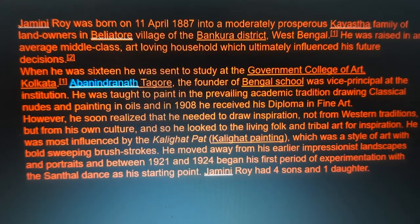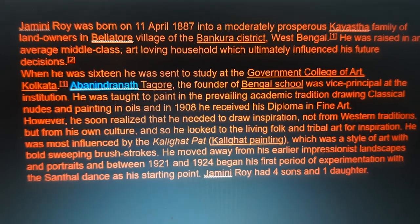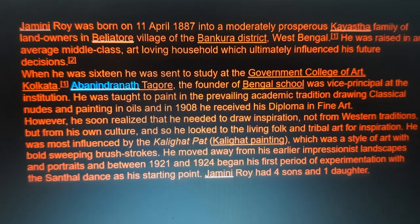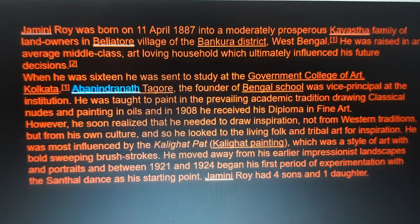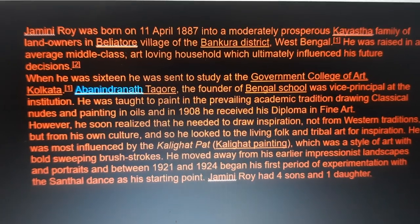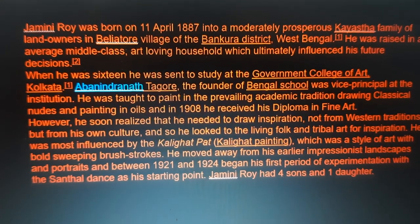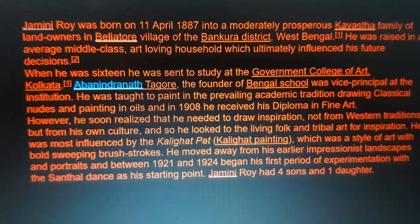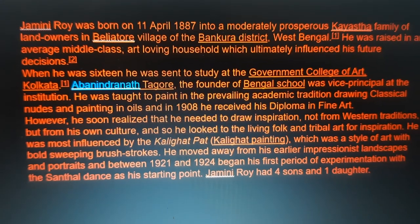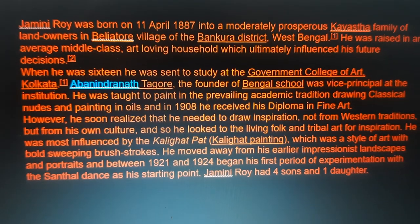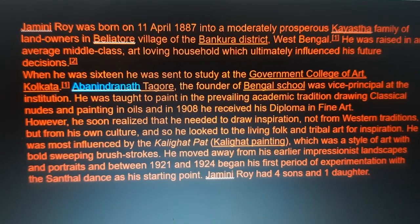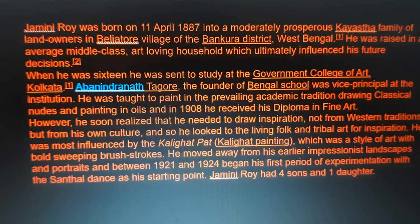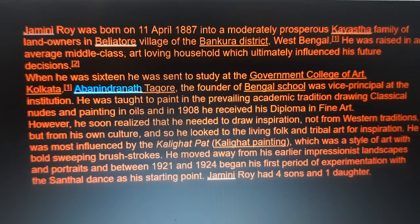However, he soon realised that he needed to draw inspiration not from western traditions, but from his own culture. And so he looked to the living folk and tribal art for inspiration. He was most influenced by the Kalighat painting, which was a style of art with bold sweeping brush strokes. He moved away from his earlier Impressionist landscapes and portraits, and between 1921 and 1924, began his first period of experimentation with the Santal dance as a starting point. Jamini Roy had four sons and one daughter.